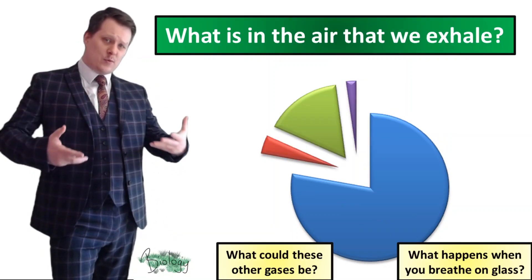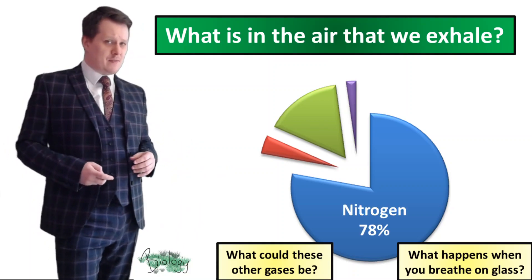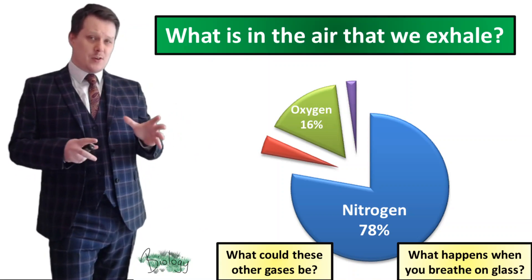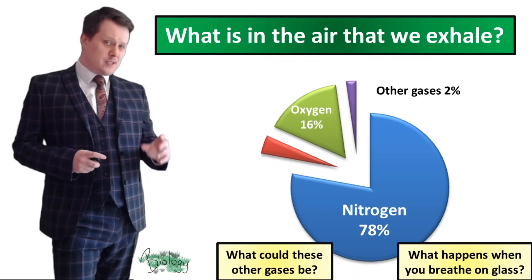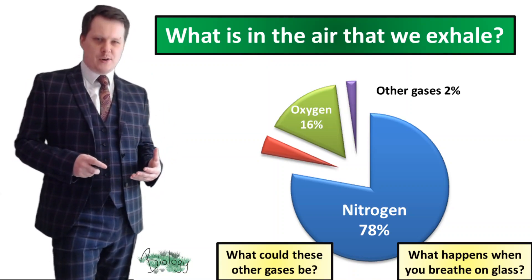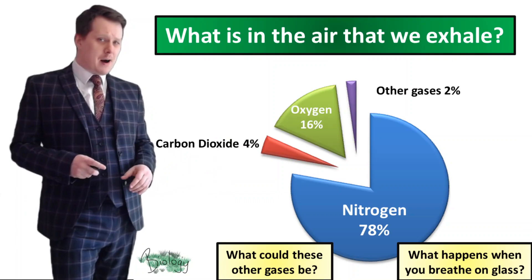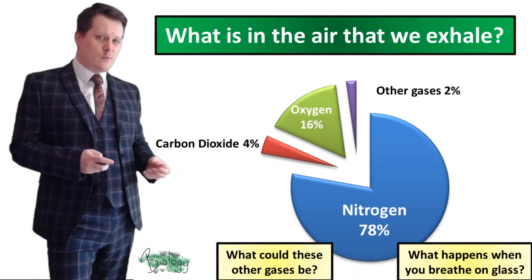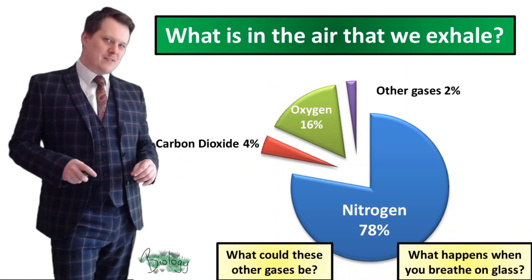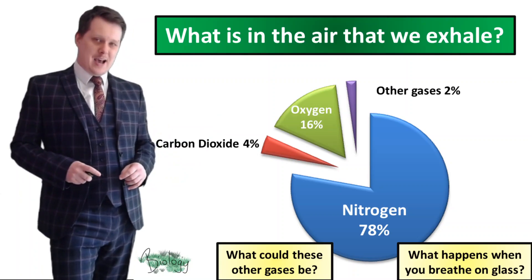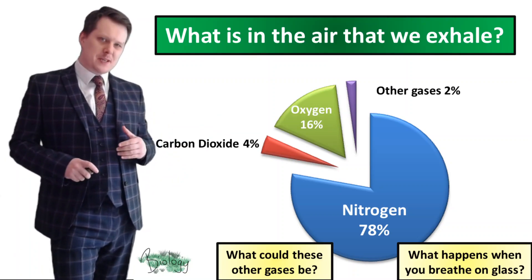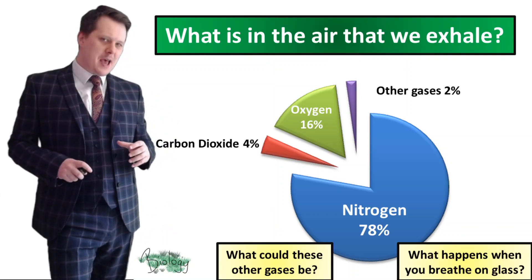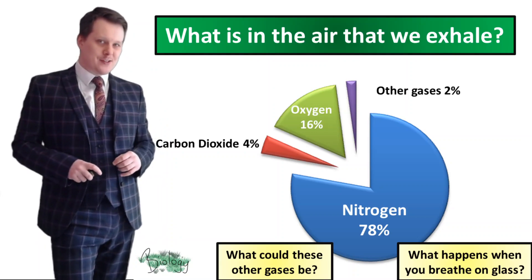Now let's compare that to the air that we breathe out. The amount of nitrogen stays the same at 78%. The amount of oxygen has gone down from 21% to 16%, so that must be being used by the body. The other gases has increased by 1%, so we must be generating a waste product. Carbon dioxide has increased from 0.04% to 4% and is the main waste product of the body. The other waste product is suggested by what happens when you breathe onto a piece of glass or a mirror — you get condensation, because the water vapour in your breath is condensing.